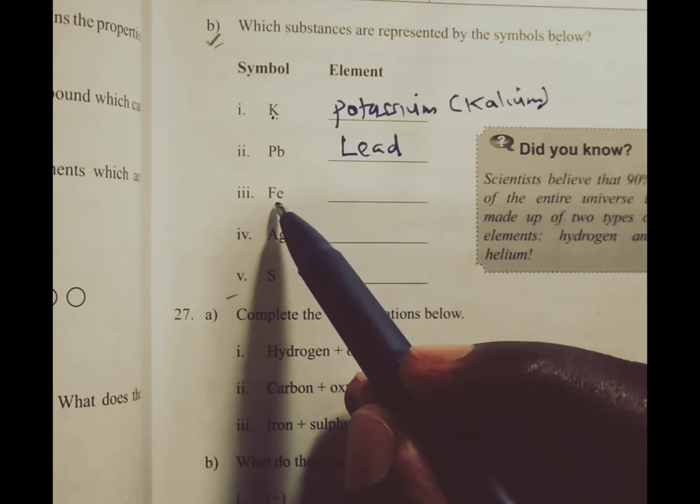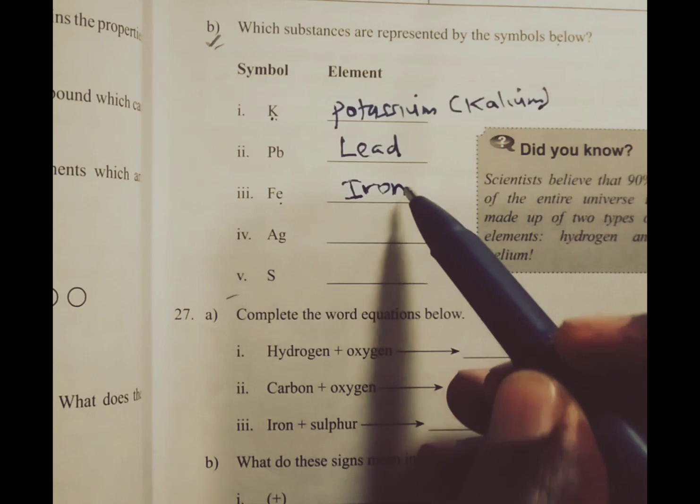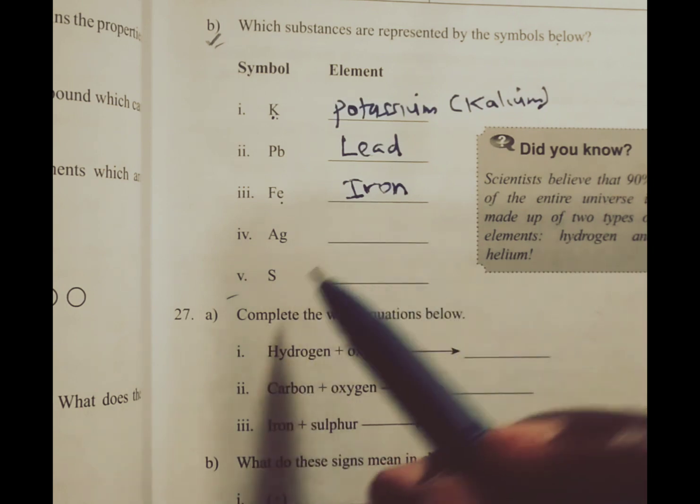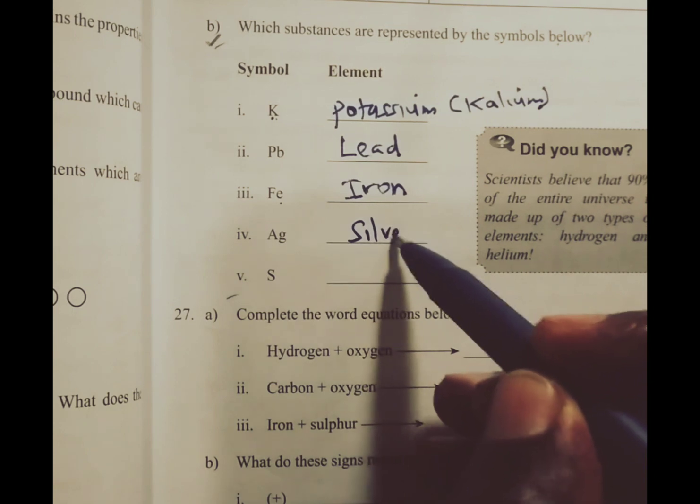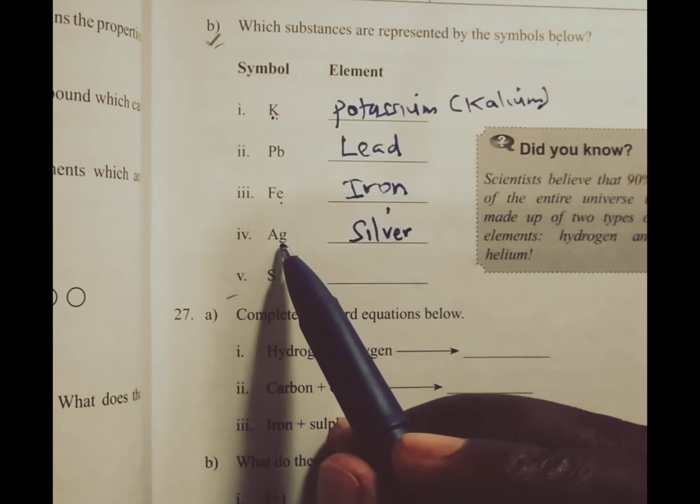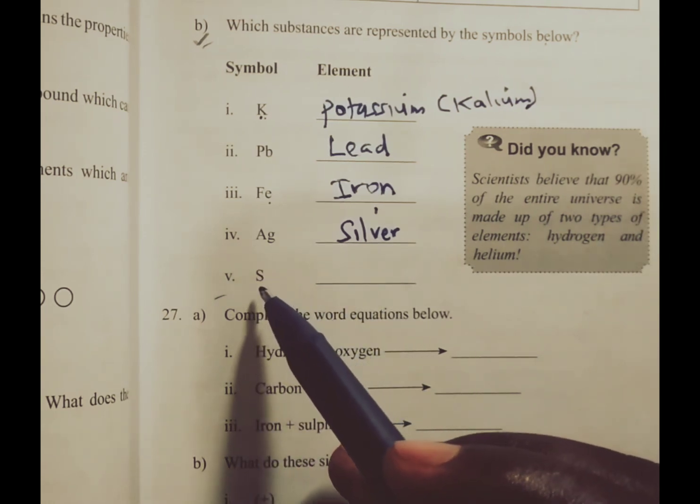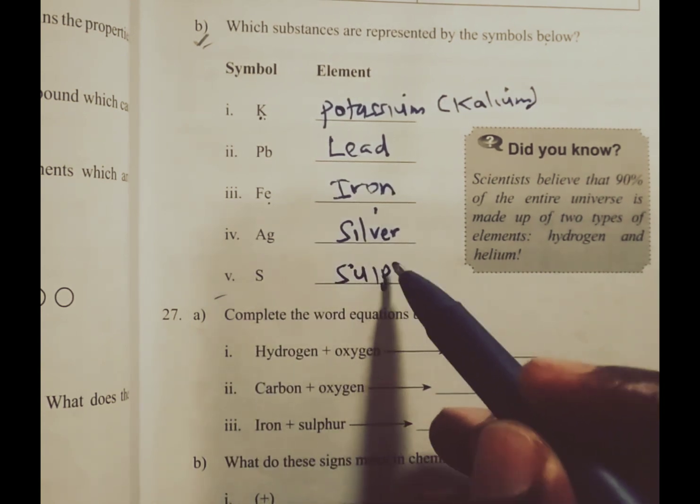We have Fe which stands for iron, and Fe comes from the Latin name ferrum. We have Ag which stands for silver, and this chemical symbol is derived from the Latin name for silver which is argentum. And of course we have S, which represents element sulfur.